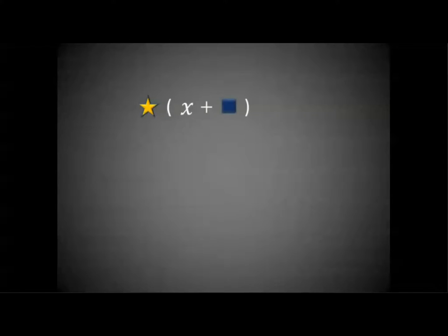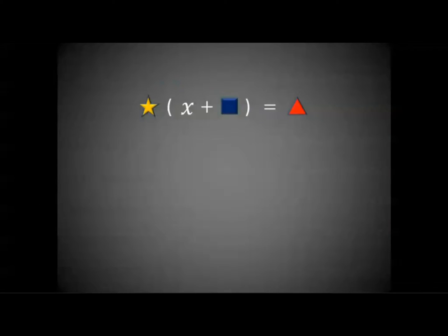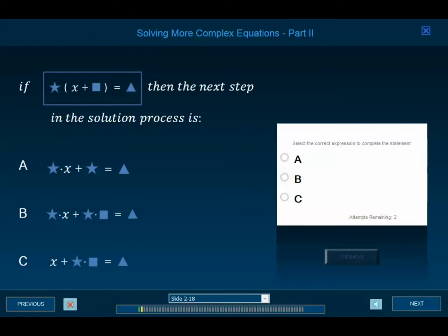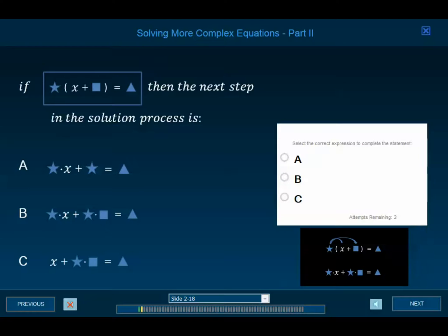Let's look at another pattern. For example, if we have an expression multiplying times an expression within parentheses of x plus another expression, and that equals another expression, we multiply the star expression times x plus — remember that the star also multiplies times the square. Then the next step in the solution process is which of the following?